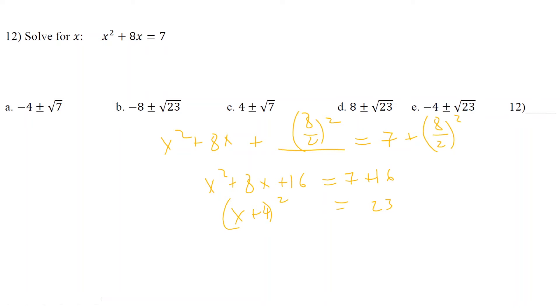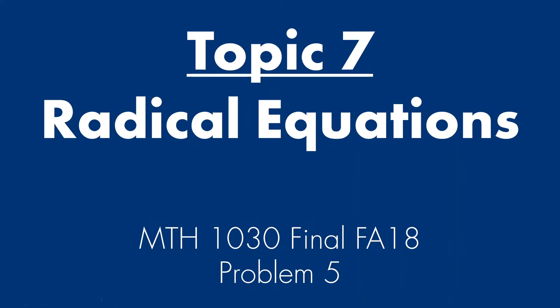Now, do not forget, when you take the square roots of both sides, it's plus or minus x plus 4 equals plus or minus square root of 23. So x equals negative 4 plus or minus square root of 23. So it is E. Okay, we're almost done. Almost done with the 10 topics. Topic 7. Radical equations.